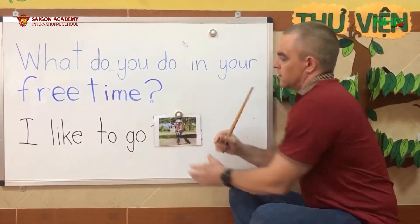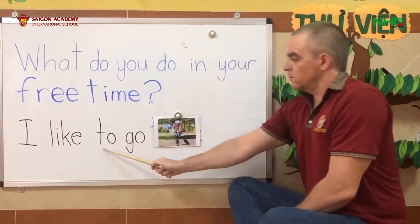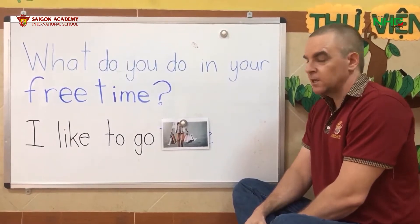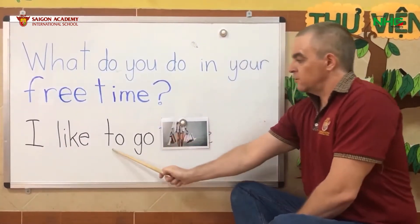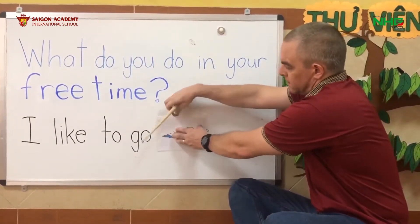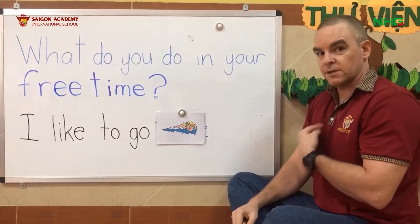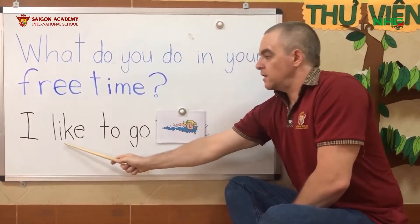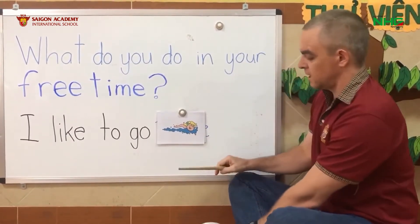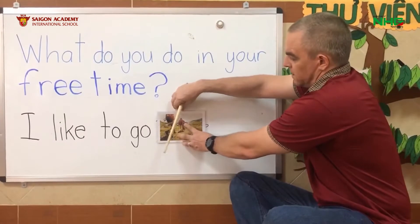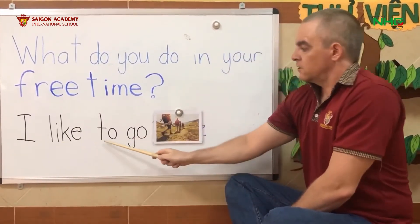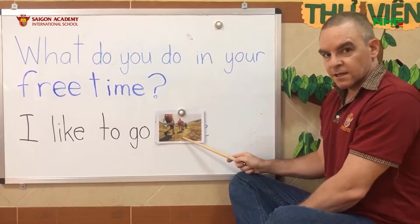If you don't like the park, maybe you like rollerblading, so you can say: I like to go rollerblading. If you don't like rollerblading but like shopping, you can say: I like to go shopping. If you like swimming like me, you can say: I like to go swimming. What if you like hiking? I like to go hiking — remember, hiking in the mountains. Good job, boys and girls!